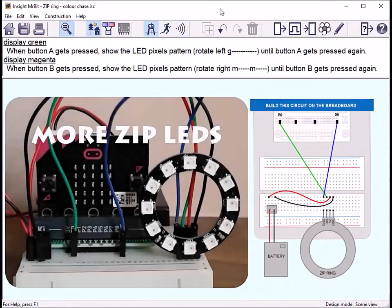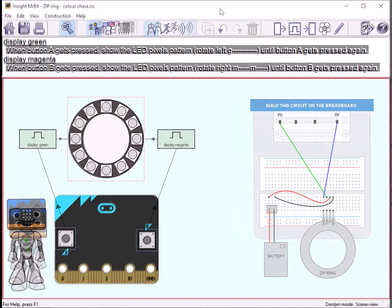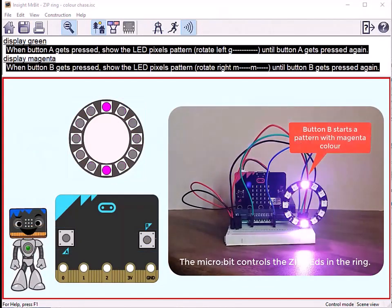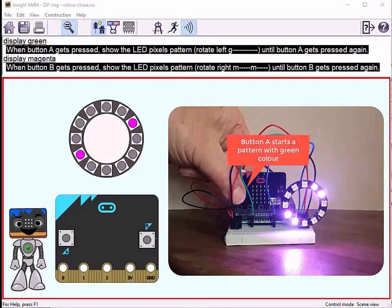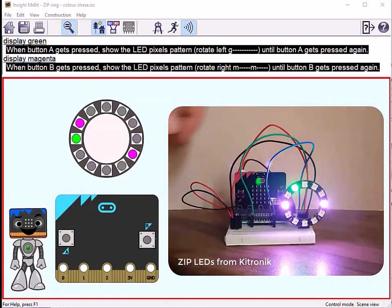You can also control multi-colour LEDs. In this example, each button starts a different colour sequence. The buttons can work independently of each other. As always, the program script describes what each button does.